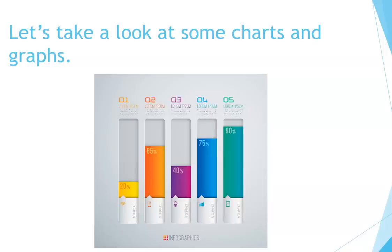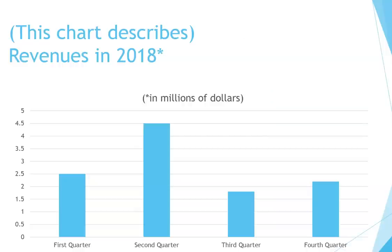Let's look at some charts and graphs. This chart describes revenues in 2018 in millions of dollars. Revenues started at 2.5 million dollars in the first quarter. Then they rose sharply to 4.5 million in the second quarter. Then revenues dropped dramatically to about 1.9 million dollars in the third quarter. Then they went up slightly in the fourth quarter.